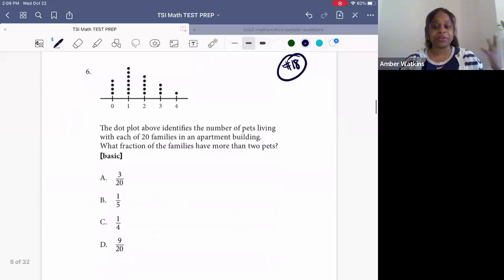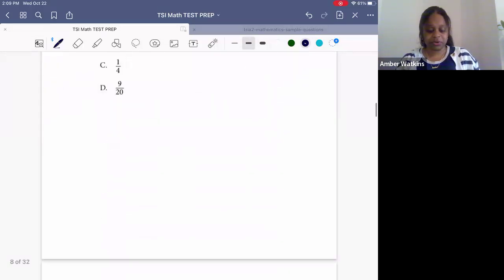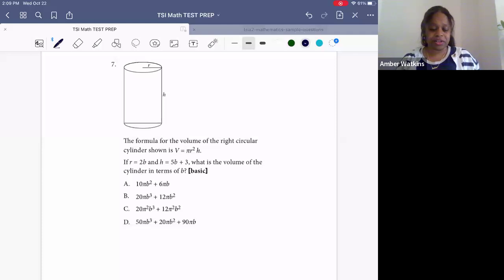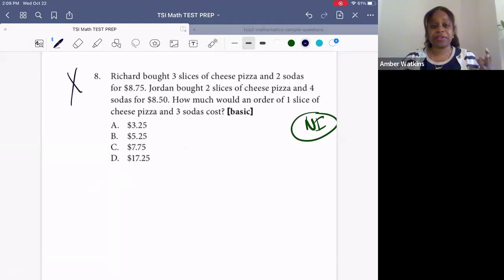Number six, dot plots are still included. Seven, unfortunately, being able to write the equation and replacing different variables, this cylinder question is still on it. Number eight, this is no longer included and I'm really happy about that because this is solving systems of equations where you write two statements, one for Richard, one for Jordan, then you have to solve. This one is no longer included, so you can mark this one off your test.